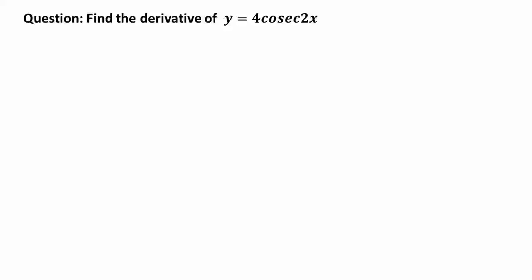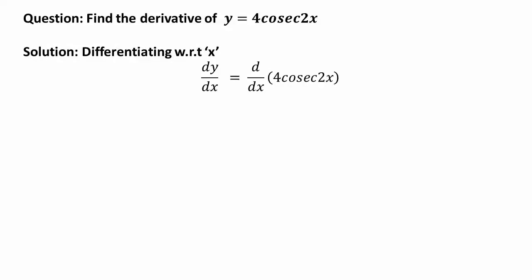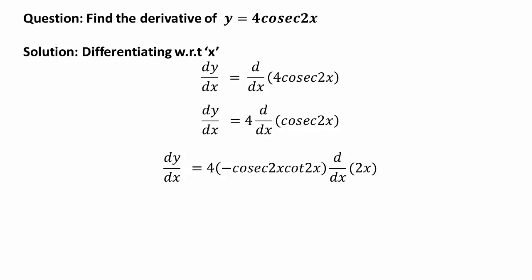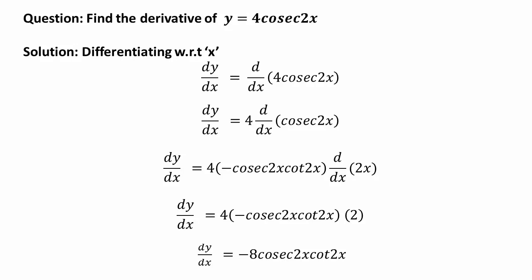Find the derivative of y = 4csc(2x). Differentiating with respect to x: dy/dx = 4 · d/dx(csc 2x). The derivative of csc(2x) is -csc(2x)cot(2x) · d/dx(2x). Since d/dx(2x) = 2, we get dy/dx = 4 · (-csc(2x)cot(2x)) · 2 = -8csc(2x)cot(2x).